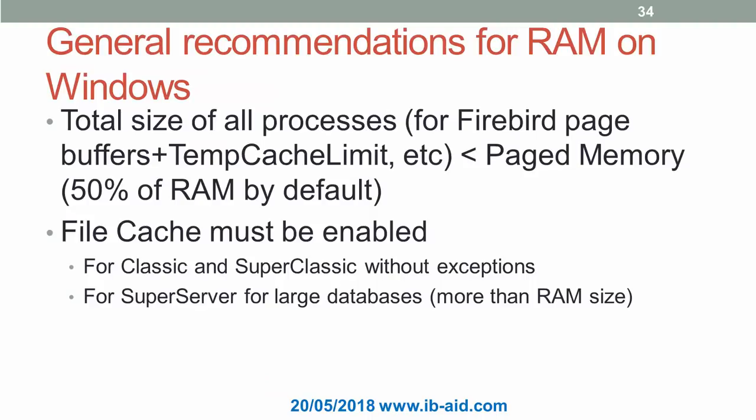Approaching the end of the webinar, here are general recommendations for tuning memory on Windows. The total size of all processes — including Firebird with its page buffer, TempCacheLimit, LogMemSize, and so on — should be less than the paged memory limit, which by default is 50% of RAM. File cache must be enabled for Classic and SuperClassic without exceptions. For SuperServer, file cache should be enabled for large databases that exceed available memory; the default recommendation is to keep it enabled.